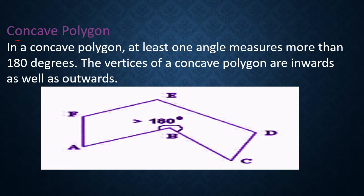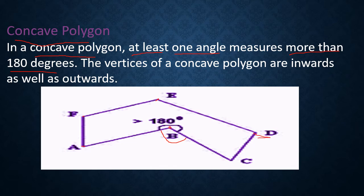In a concave polygon, at least one angle measures more than 180 degrees. The vertices of a concave polygon are inwards as well as outwards. For example, vertex B is inward, while vertices A, F, E, D, and C are outward vertices. So a concave polygon means at least one angle measures more than 180 degrees and the vertices are both inwards and outwards.